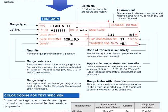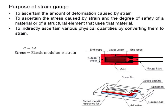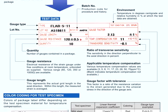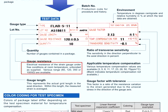Next, we have the test conditions, which refer to the environmental conditions under which the test data are obtained. Then we have the gauge length, which refers to this length shown here. And then we have the gauge resistance, which refers to the electric resistance of the stringage under free conditions at room temperature.